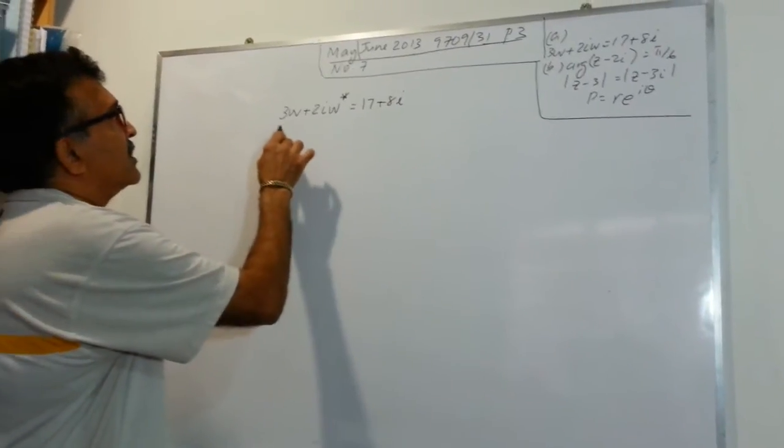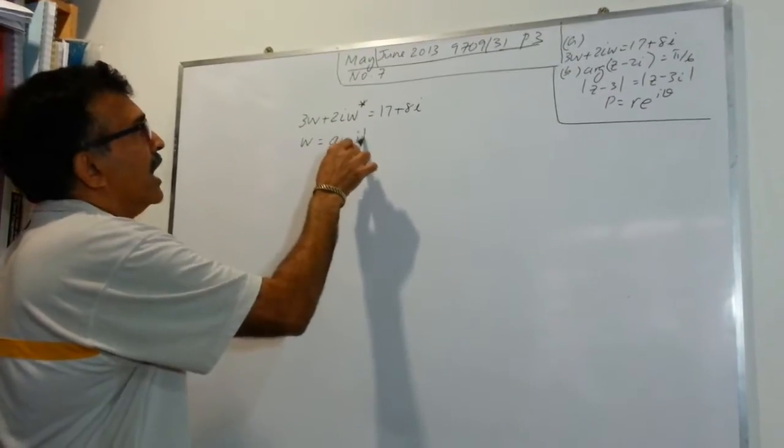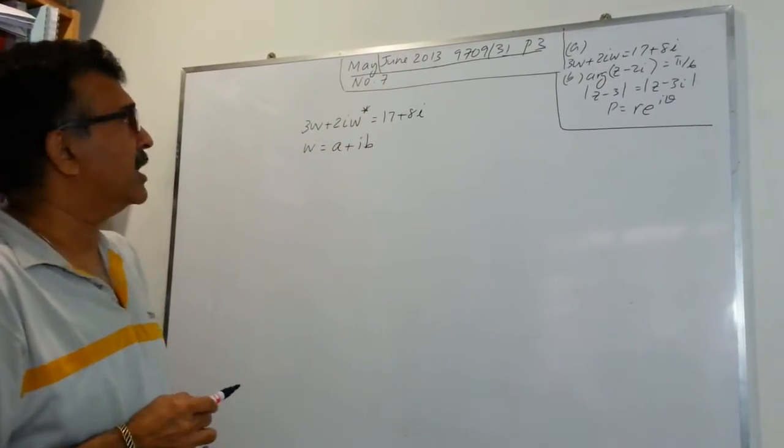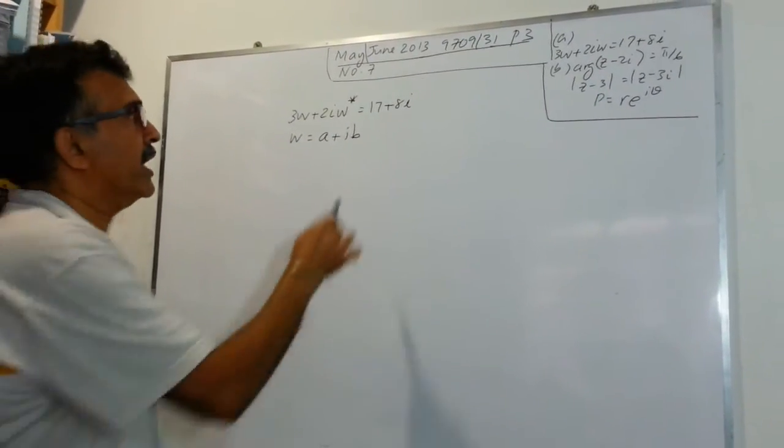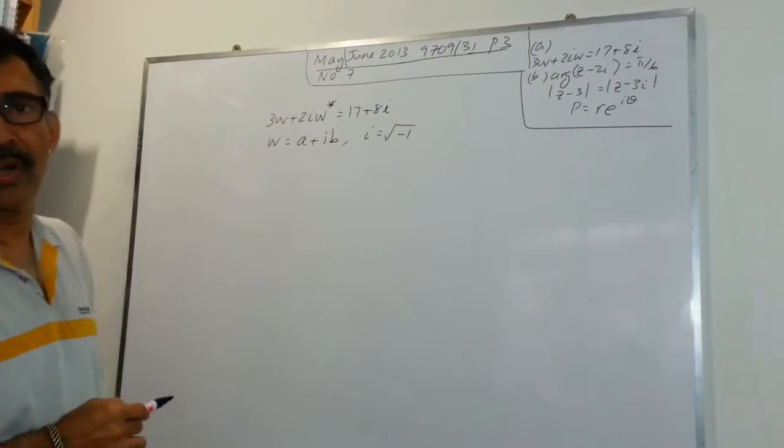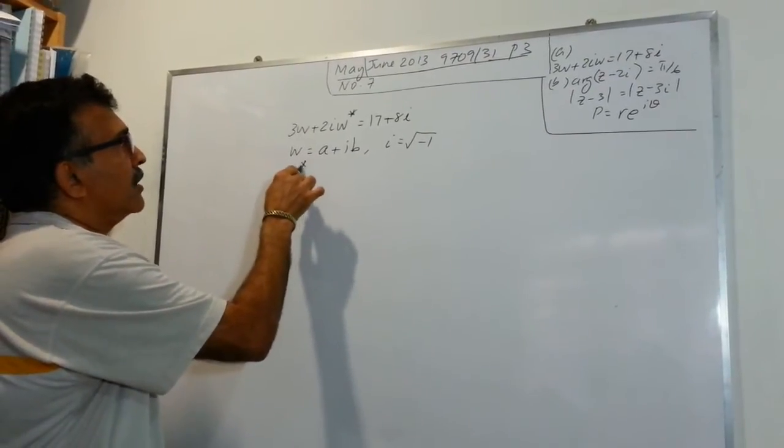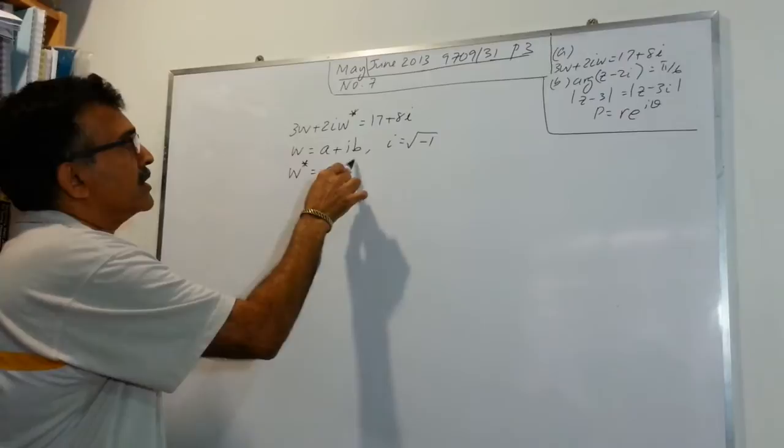So let's start slowly. Let's define W as A plus IB. Our complex number A plus IB. And all of us know that I equals the square root of minus 1. The conjugate W star will be A minus IB.